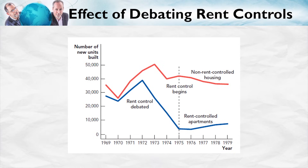Here's an interesting graph from Ontario, Canada, showing how rent controls can reduce the number of new units being built. Prior to rent control even being debated, there were about 30,000 to 40,000 new units being built every year in Ontario. After rent control was put into place in 1975, there were fewer than 10,000 new units being built every year. Also note that the number of new apartments being built declined even before rent control was put into place, which makes perfect sense — an apartment has to pay for itself over 30 or 40 years, as they're very durable, long-lived assets.